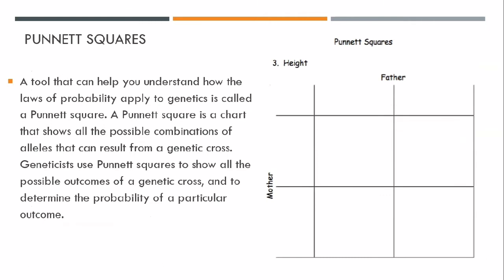A tool that can help you understand how the laws of probability apply to genetics is called a Punnett Square, like the one you see here. A Punnett Square is a chart that shows all the possible combinations of alleles that can result from a genetic cross. Geneticists use Punnett Squares to show all the possible outcomes of a genetic cross and to determine the probability of a particular outcome.